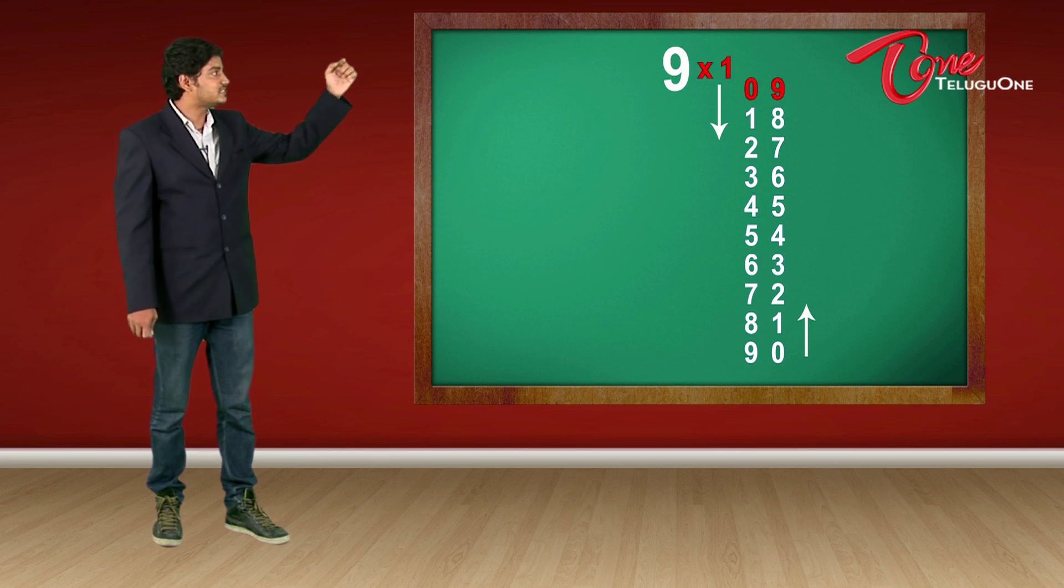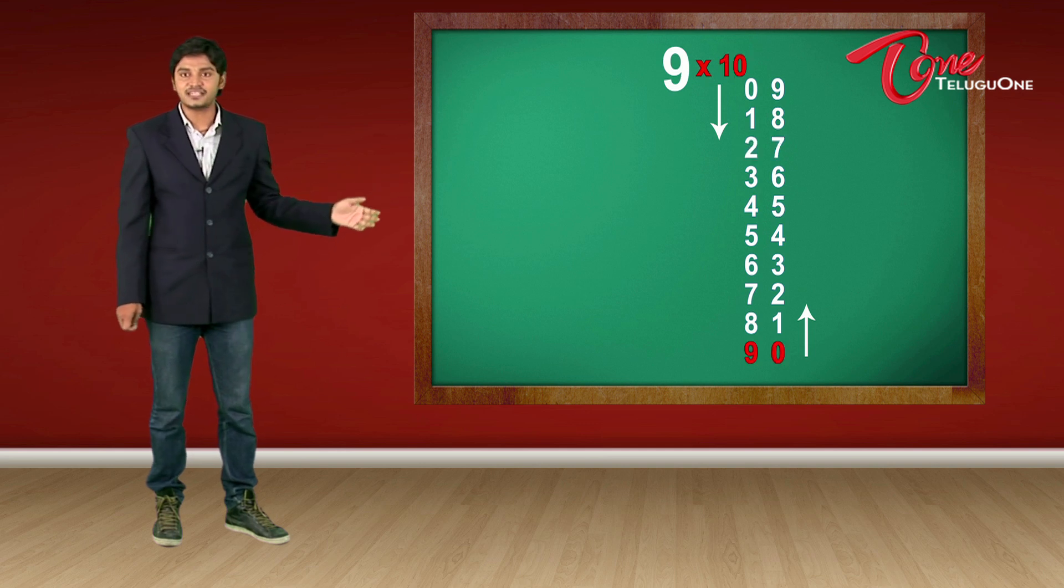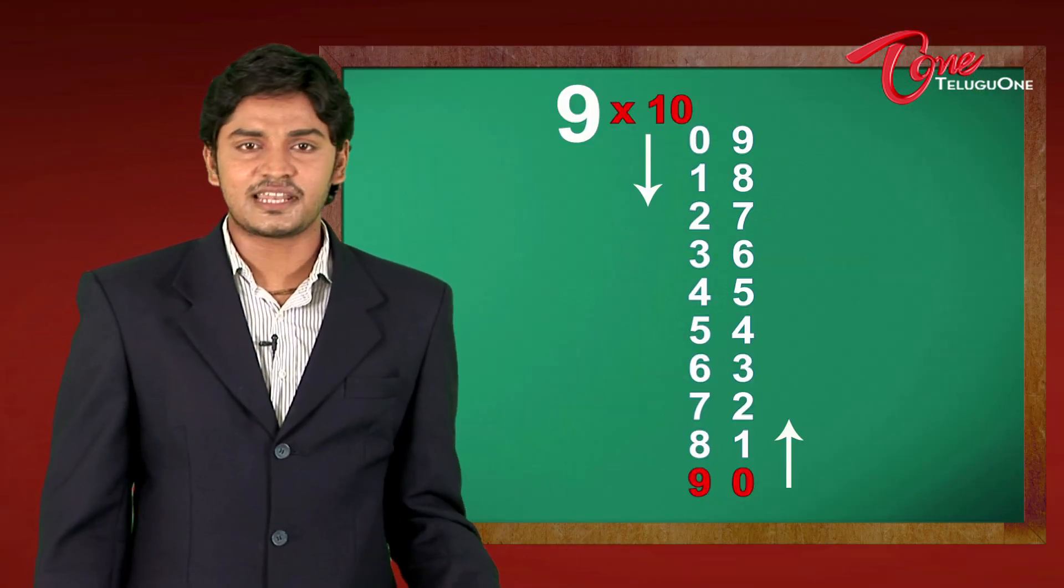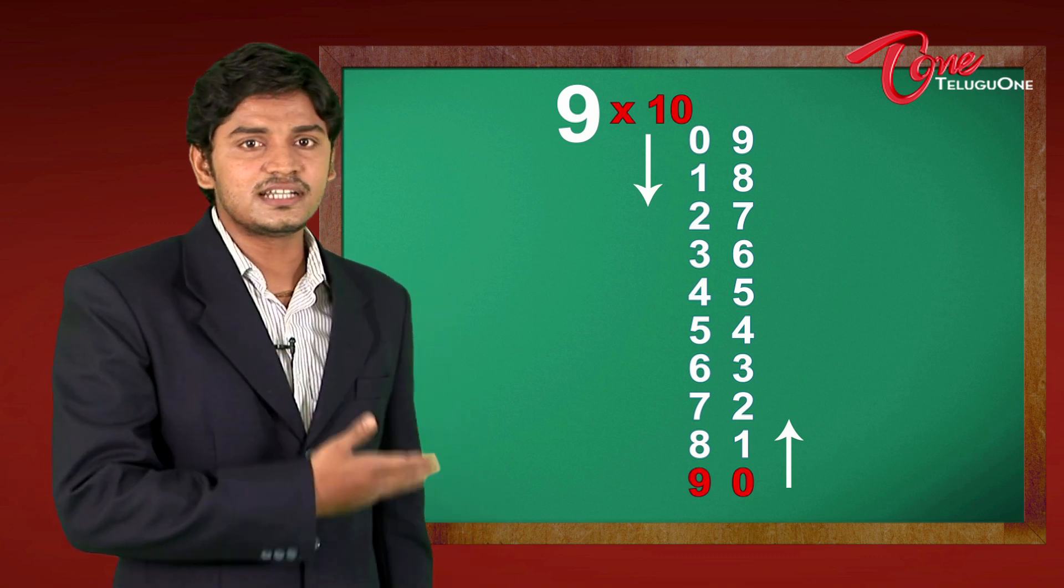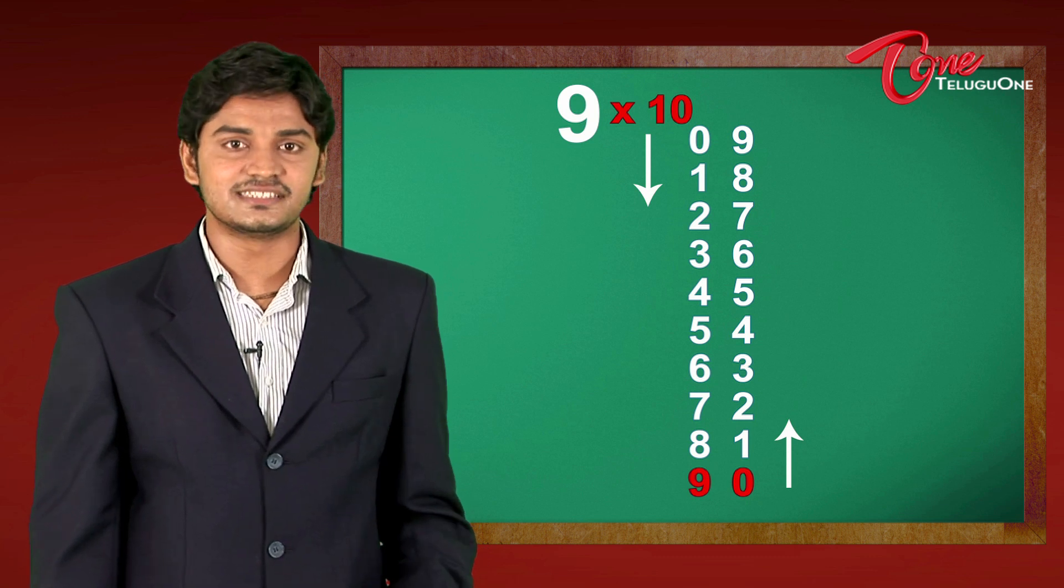9 times 1 is 09. 9 times 2 is 18. 9 times 3 is 27 and so on up to 9 times 10 as 90. This is a very nice technique and you can all learn it very easily. But is there anything which is even easier than this? Yes, there is.